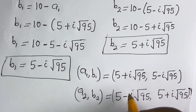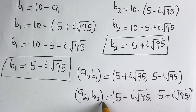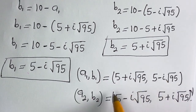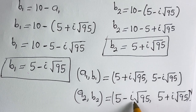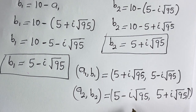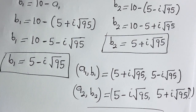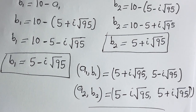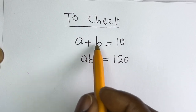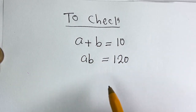You can see that the value of A1 is equal to the value of B2, and the value of B1 is equal to the value of A2. Let's check to confirm if this answer is right. We have the given equations: A plus B is equal to 10, and AB is equal to 120.